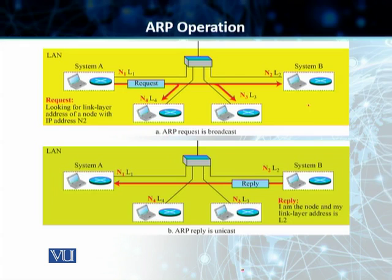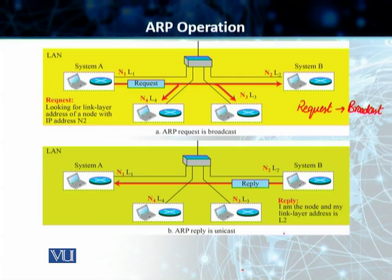The ARP request is always a broadcast. The link layer address that you are going to be using for the ARP request is the broadcast address. In the case of the ARP reply, this is always going to be unicast.